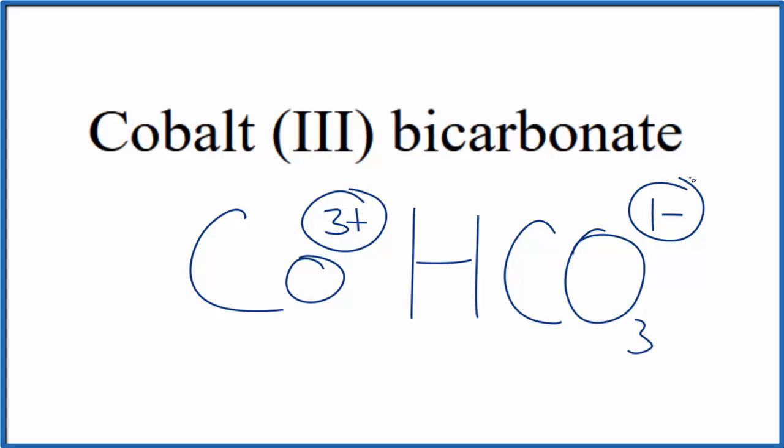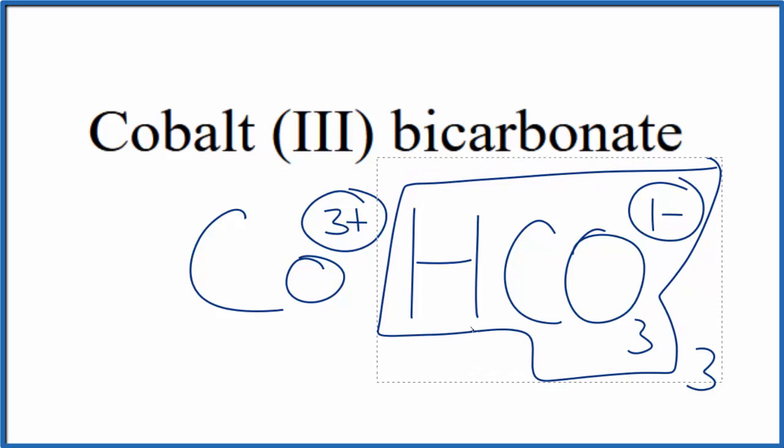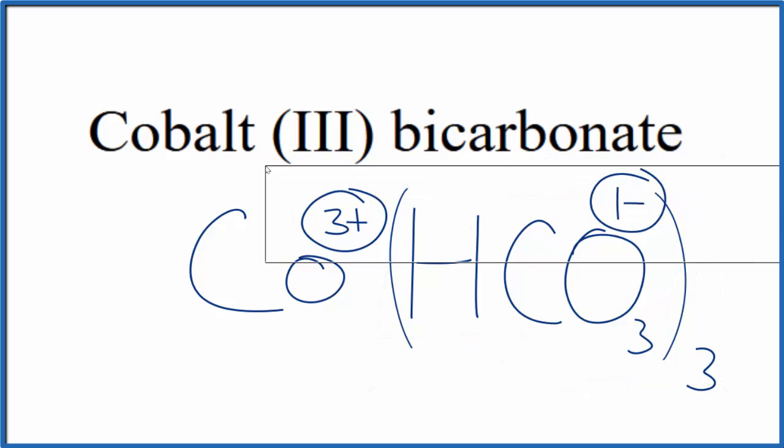We could do that if we had 3 of these bicarbonate ions. If we had 3 of these, 3 times 1 minus, that gives us 3 minus. That would balance the 3+. So we do need to place this with parentheses, and then we can get rid of these symbols here.